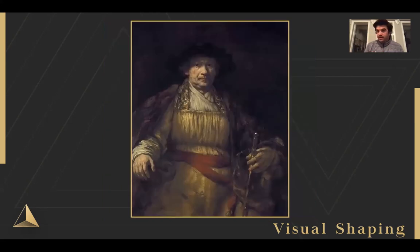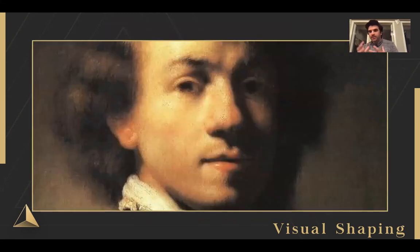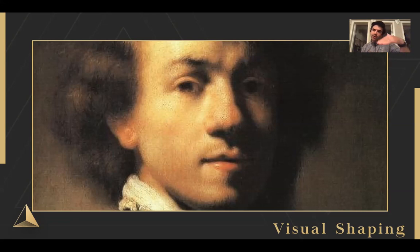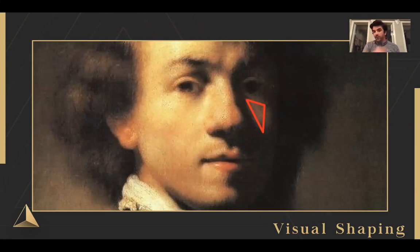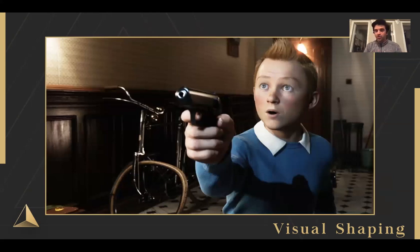One master of character shaping was Rembrandt. He always had soft shaping across characters to create emotion. Rembrandt lighting is lighting at roughly a 45-degree angle on either side of the character, creating shaping across the forehead, chin, and nose. One telltale sign of Rembrandt lighting is a small shadow triangle on the cheek. Light crosses over the bridge of the nose and creates that triangle. This translates into CG images — you can see the triangle effect in Tintin, for example.